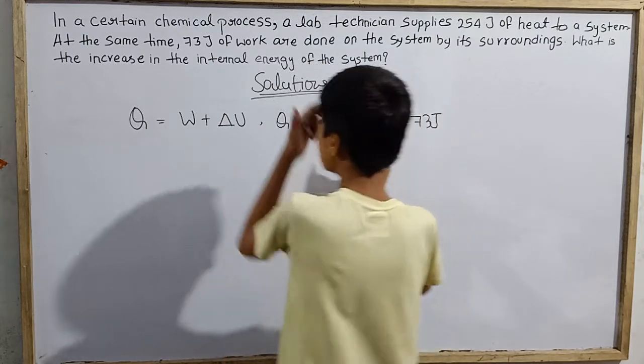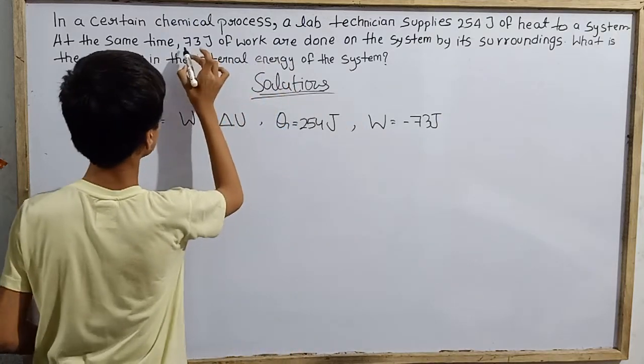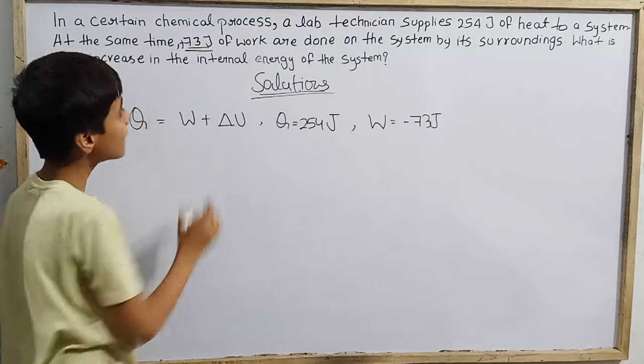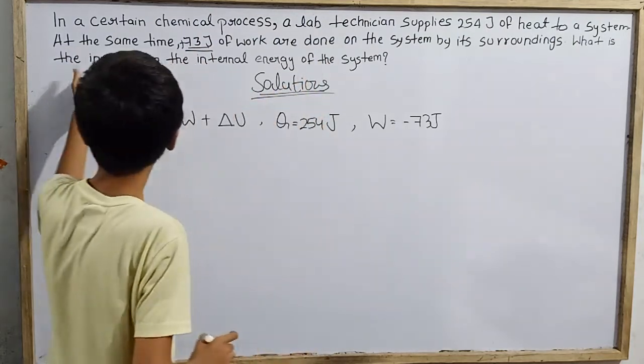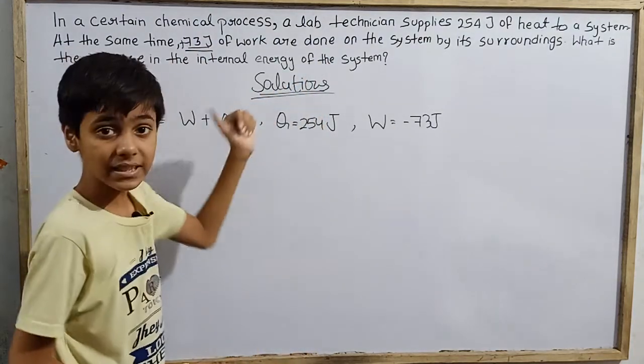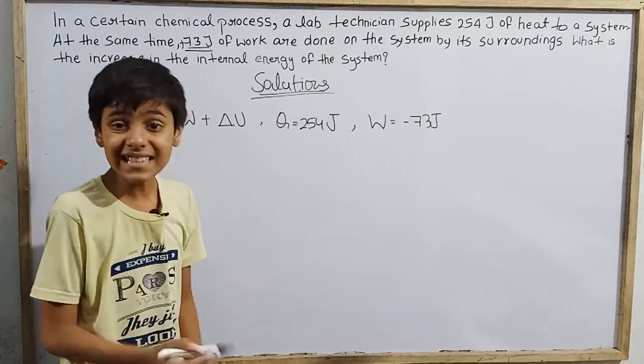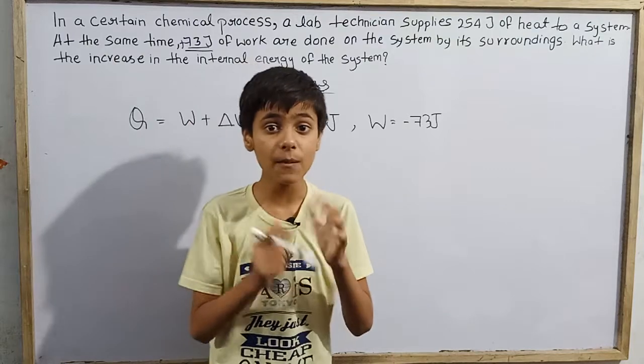But negative, actually. Here there's no sign of negative; it's just given as positive. But at the same time, positive 73 joules of work are done on the system by its surroundings. So what is happening here?